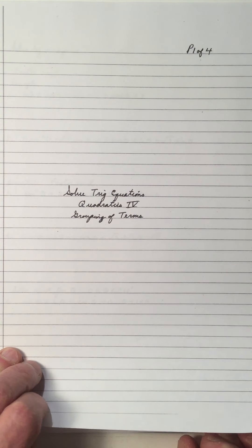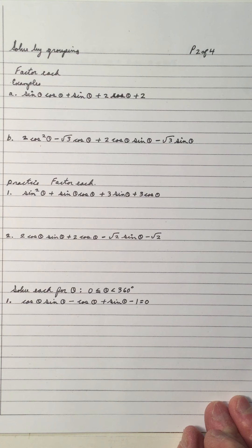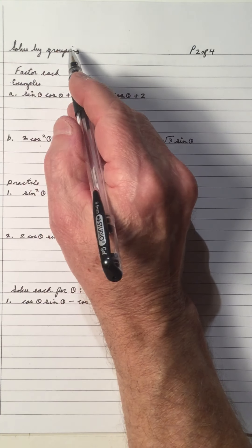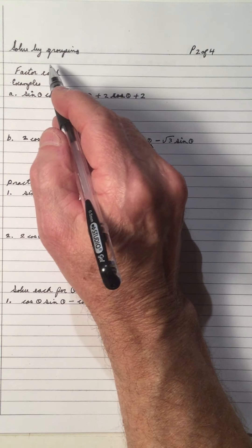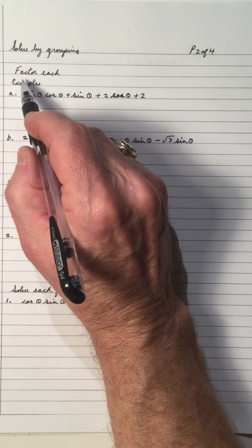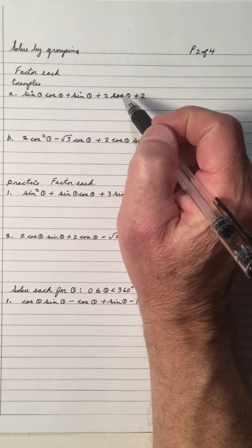Another way to factor would be to group terms. And to group terms, we need four terms. Solve by grouping. And to do some of that, let's do some practice with factoring first.